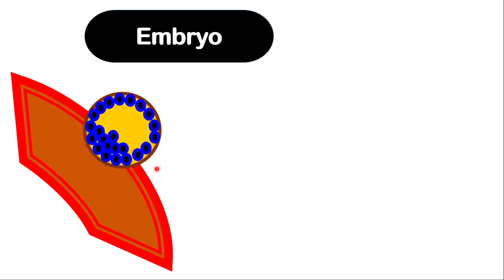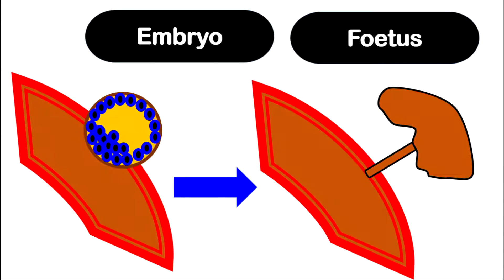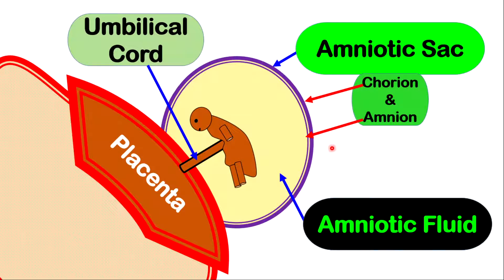The embryo will continue to undergo rapid cell division to form the fetus. The fetus will be formed and also a placenta will be formed. Attaching the fetus to the placenta will be the umbilical cord — we're going to talk about that in more detail. So, once the placenta is formed in the uterus, the umbilical cord will be the connection between the fetus and the placenta.